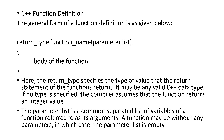For the function definition: you write the return type, function name, and parameter list, then open the curly bracket, write the body of the function, and close the curly bracket. This is the function definition.